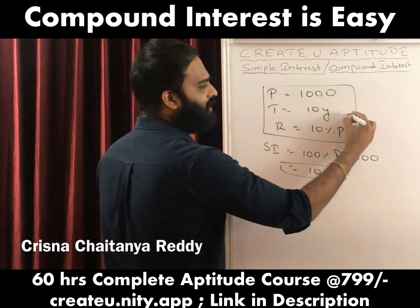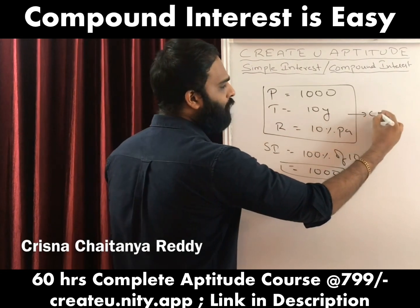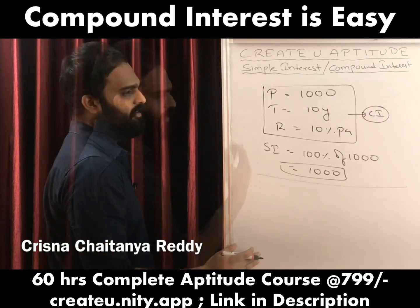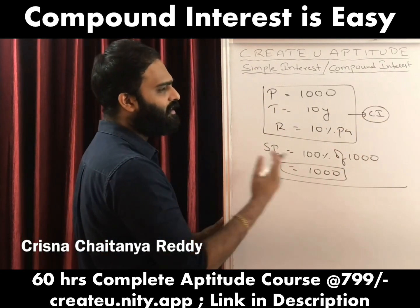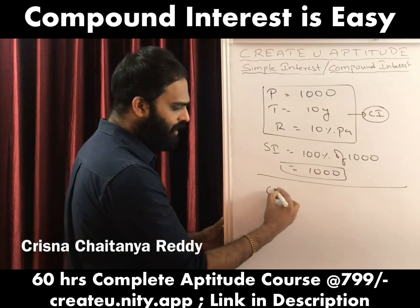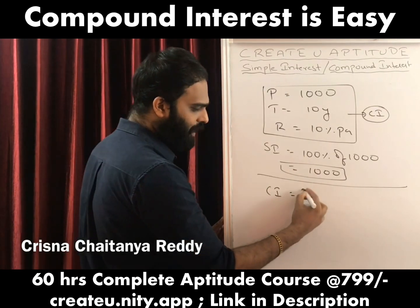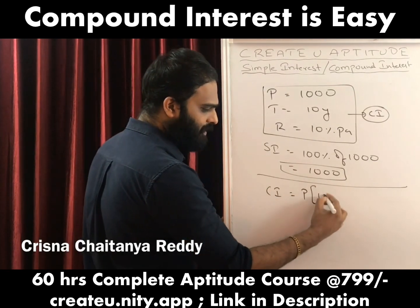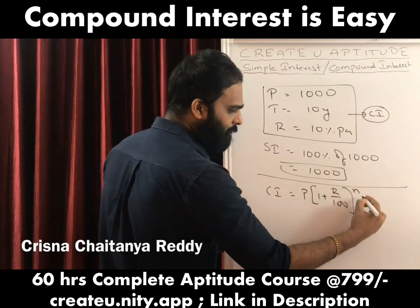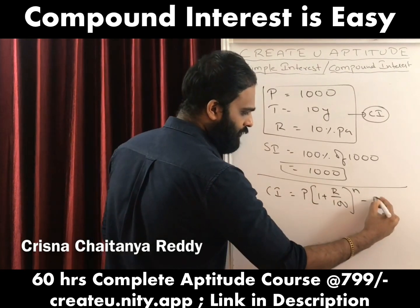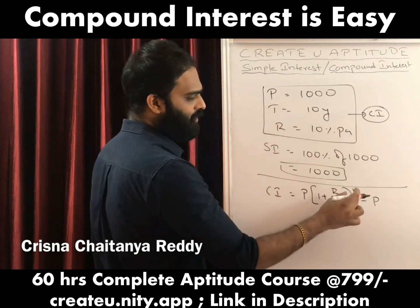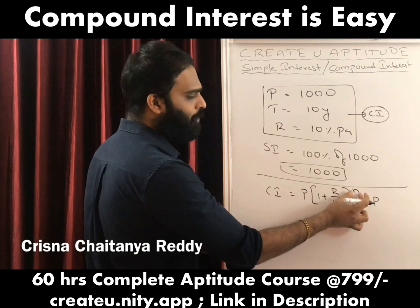Suppose the same question is asked for compound interest — how shall we solve this? There is a formula for compound interest: CI = P × (1 + R/100)^N − P, where N is the number of years. You can also call it whole power T.